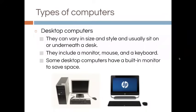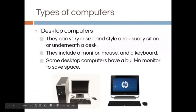There are many types of computers. These are the original — desktop computers. They can vary in size and style and usually sit on or underneath the desk. They include a monitor, mouse, and keyboard. Some desktop computers have a built-in monitor to save space. That's what you see here on the right.